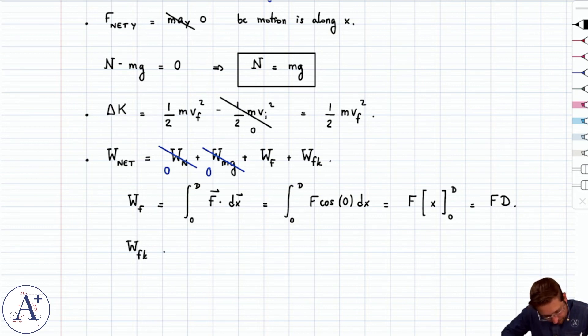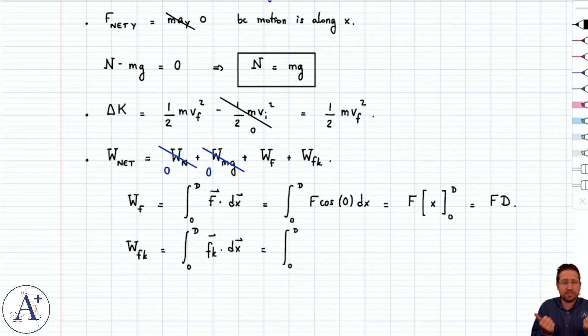Work done by fk. Same comment. Fk is constant in magnitude and direction. I could use fk dot delta x. Let's just be thorough and use the definition. So we'll use the integral. It's the integral from zero to D of fk dot dx. Now, by definition, fk points opposite the displacement every time. Therefore, the angle between the two, fk and dx, is pi radians or 180 degrees, whatever you want. So the magnitude of fk is mu k n. Cosine of the angle between those two vectors, that's cosine pi dx.